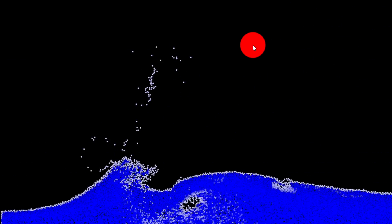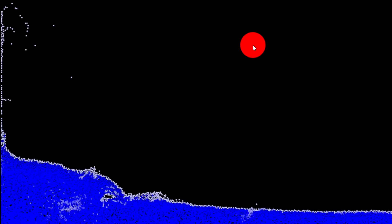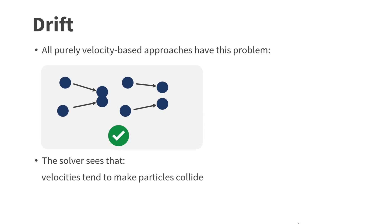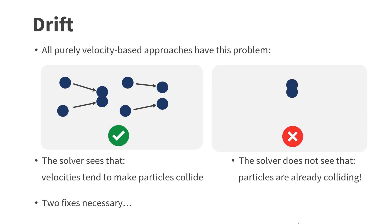After implementing all of this, we get the following result. The problem is partly caused by the low iteration count and the large time step size I use. We could reduce this problem by increasing the number of iterations or decreasing the time step size, which is typically done in offline simulations. However, we want the simulation to be as fast as possible to run inside a browser and using JavaScript. The main problem we have is drift. All purely velocity-based methods have this problem. The solver sees that velocities tend to make particles collide. However, it does not see if particles are already colliding.